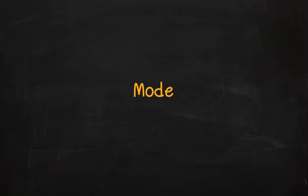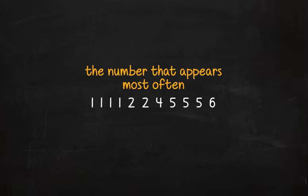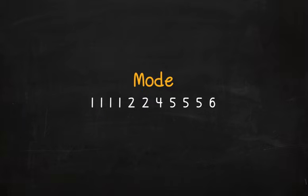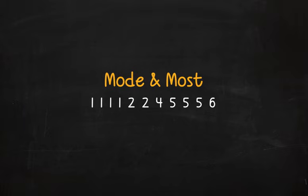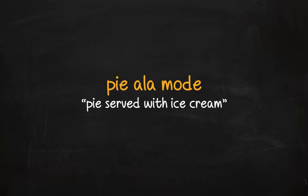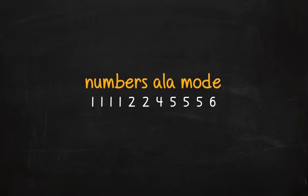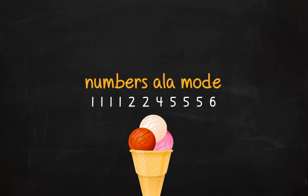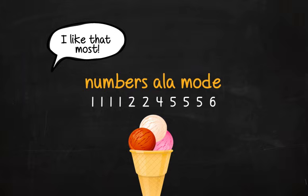And now for the mode. The mode is the number that appears most often, and most days you read one page. An easy way to remember that mode means the one that appears the most is that mode and most both start with 'mo.' Hey, wait a minute — pie à la mode means pie served with ice cream. Do you suppose these numbers à la mode come with ice cream? Sweet! I like that the most.